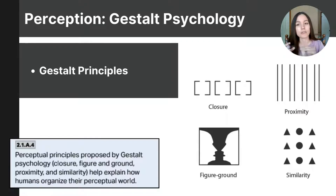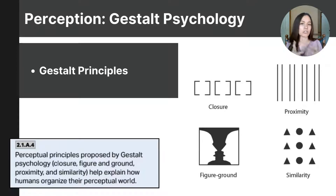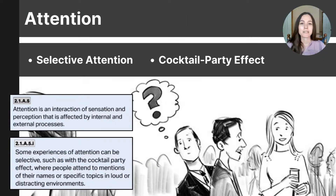Then there's proximity, which refers to the way we mentally group objects that are close together — objects located near one another are often perceived as a group or unit. And lastly, similarity involves grouping objects that look alike; we tend to perceive items that are similar in shape, color, or size as belonging together. Together, these gestalt principles demonstrate how our perception is not just a passive reception of sensory information, but an active process where our brain organizes units into meaningful, coherent wholes.